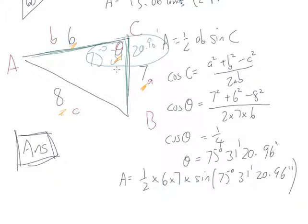Make sure you sine, don't shift sine, the answer there, put it into your calculator. So half times 6 times 7 times sine of that angle, I've got 20.33. I hope I'm right, if I'm not right, let me know. 20.33 and it's unit squared.